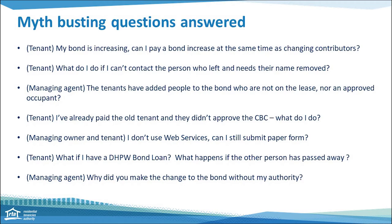Next question from a tenant: what do I do if I can't contact the person who left and need their name removed from the bond? This is quite common in the rental world. You can still submit the change of bond contributors request through web services as long as you have an email for the tenant leaving — the RTA can then send a request via email for them to respond to. However, there may be other options available, so please call our contact centre on the 1300 number.